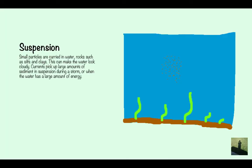Suspension. Small particles are carried in water, rocks such as silts and clays, so they're the types of things that are going to get carried in suspension. And this can make the water look cloudy. So when you look at a bit of water and you're like, oh, that's quite cloudy, it's probably because suspension is happening in there.